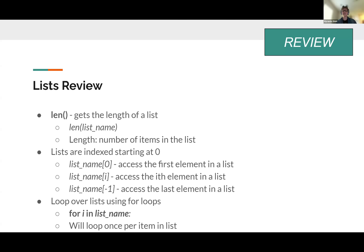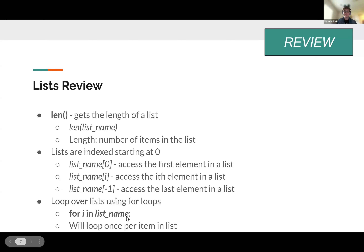For looping over lists we use for loops. When we want to loop over something in a list and do something with each item, we use a for loop. The syntax is: for i in list_name: colon. The 'i' doesn't have to be called i - you can call it whatever you want, most people call it i. This loop will loop the code once per item in the list, performing whatever indented code you have once for each item.